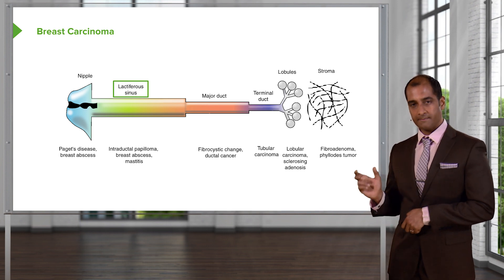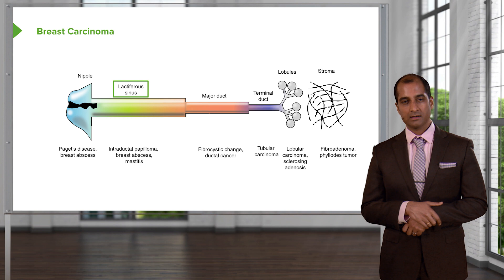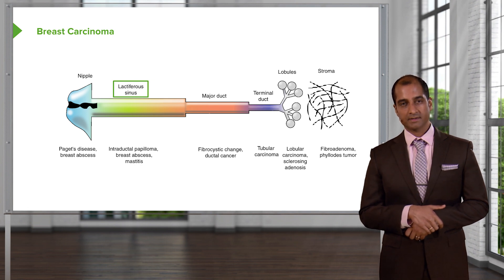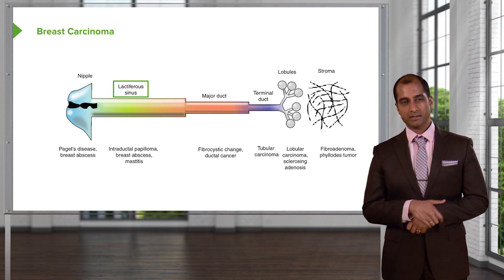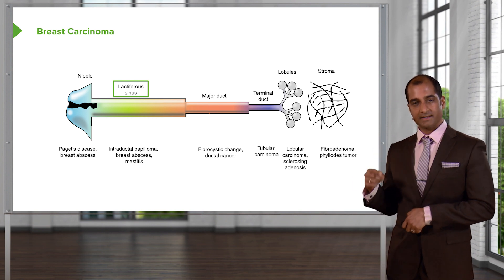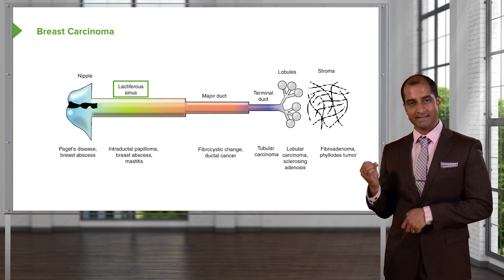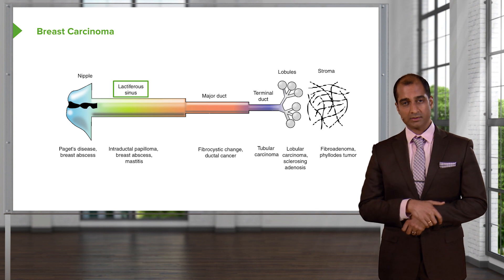That means that the ducts here, if they undergo cancerous change with maybe ductal hyperplasia, and specifically I told you about comedonal carcinoma, the basement membrane is going to be intact. But that's where you find your ductal carcinoma in situ.